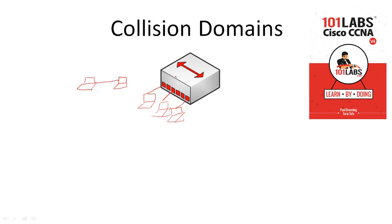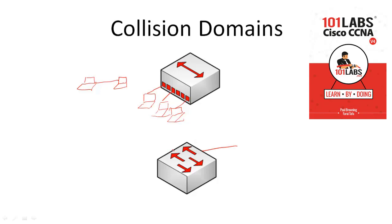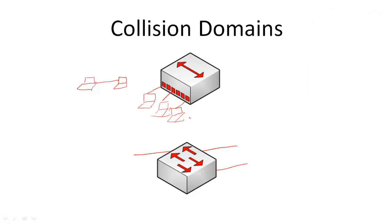In order to fix that problem, bridges and switches were invented. In a switch, every single port is a different collision domain. So if you have multiple computers connected to a switch, all the different ports are different collision domains, and you can send messages to different ports without any collision happening. What a switch does is segment a collision domain — another definition of a switch would be a device that segments collision domains.